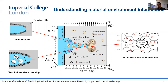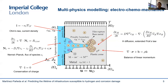I will try to convince you today that there are reasons for being optimistic, and that we have reached a point where we can use computer simulations to predict phenomena such as corrosion fatigue, hydrogen embrittlement, or pitting corrosion, leveraging on what we have learned in decades of experimental research.